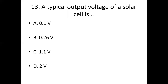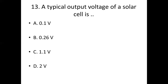Thirteenth bit. A typical output voltage of a solar cell is: Option A, 0.1 voltage. Option B, 0.26 voltage. Option C, 1.1 voltage. Option D, 2 voltage. Answer: Option B, 0.26 voltage.